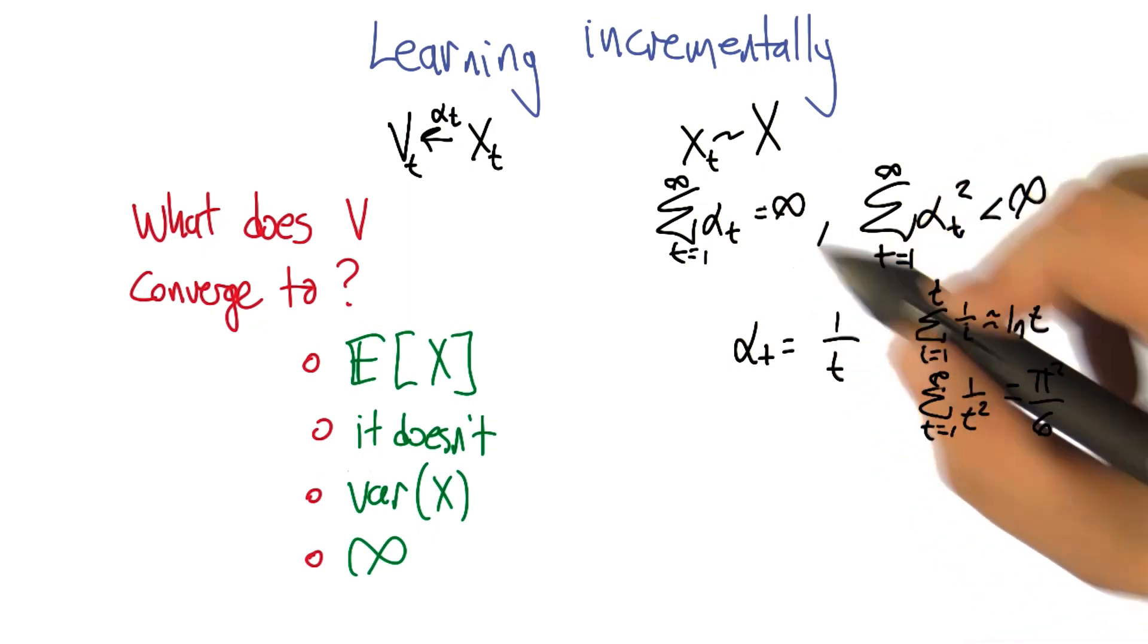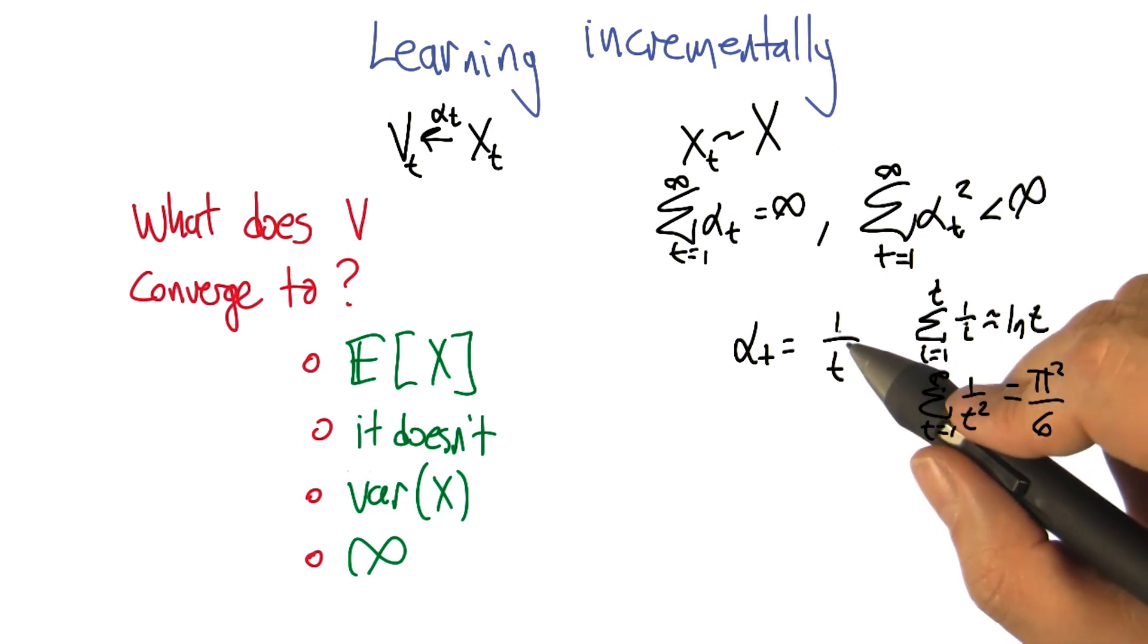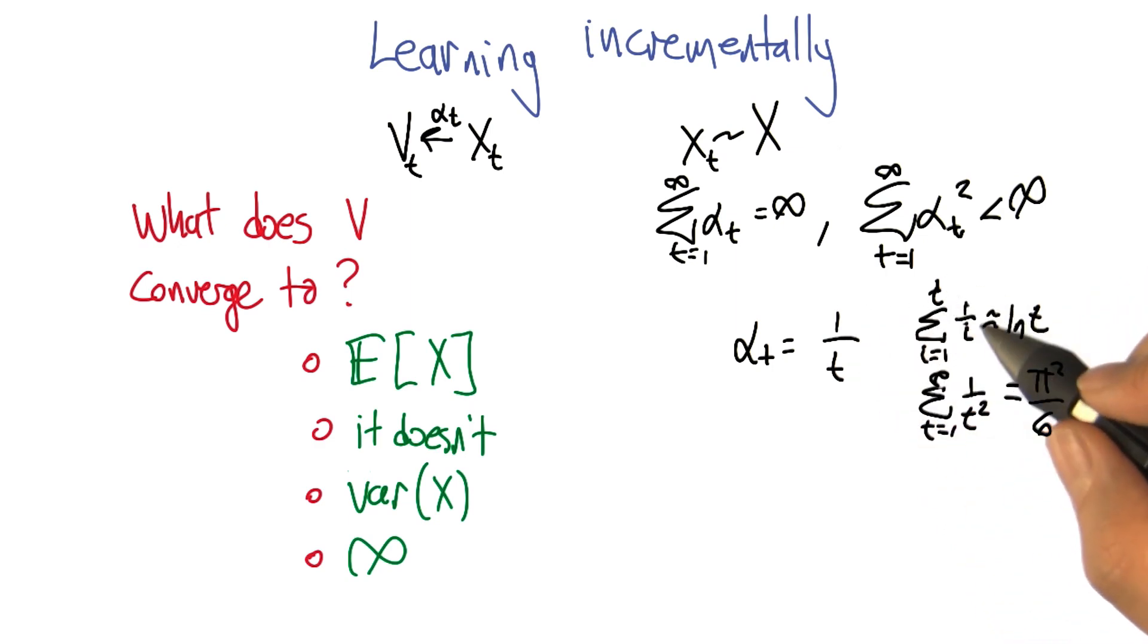Why does it satisfy the properties? Well, if you sum up the values up to some value t, sum up the 1 over i values, it actually acts like the natural logarithm. And so as t goes to infinity, the sum goes to infinity, but logarithmically, which is still infinity.